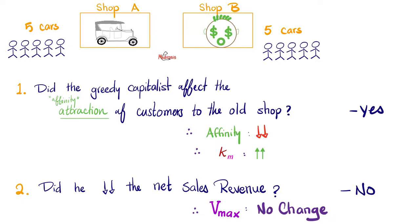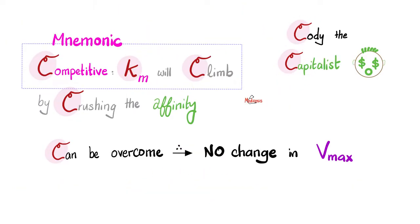Here is an analogy to understand competitive inhibitors. Imagine that we started with a shop that sells 10 cars per day to 10 different customers. Here came the competitive inhibitor, Cody the Capitalist, and opened shop just next to the first shop. Five customers will remain with the old shop and five will go to the new one. So the attraction of customers to the old store decreased. Therefore, Km is going to go up. But Cody did not alter the net sales revenue or the total number of units sold. So Km will climb, but there is no change in Vmax.